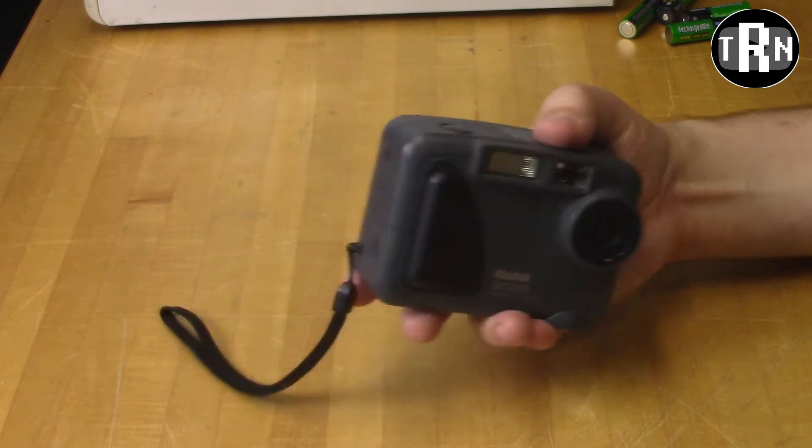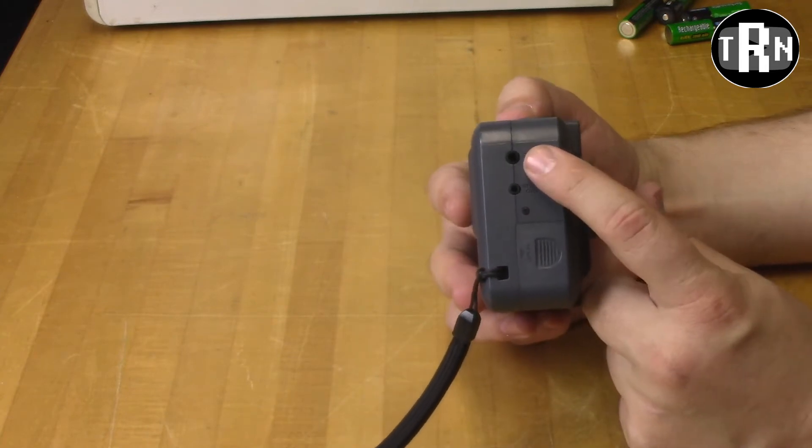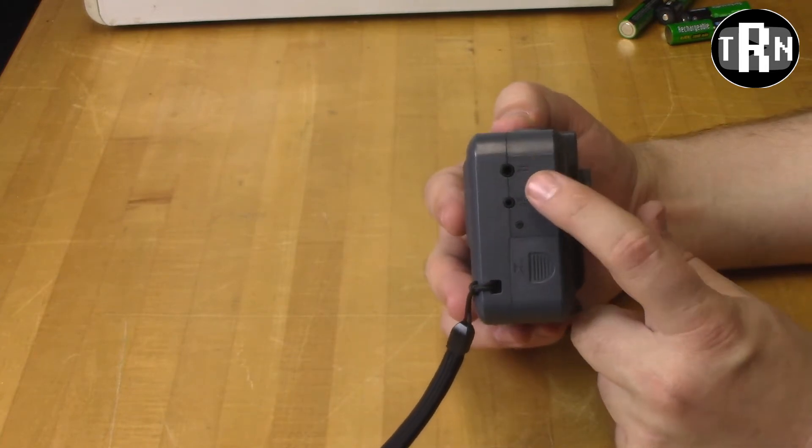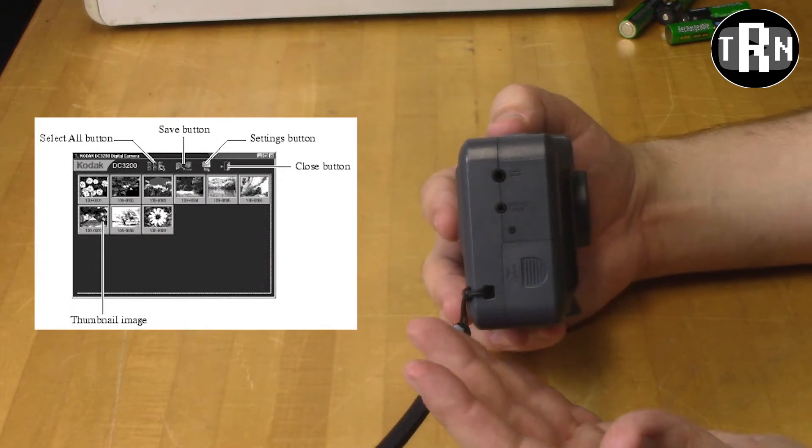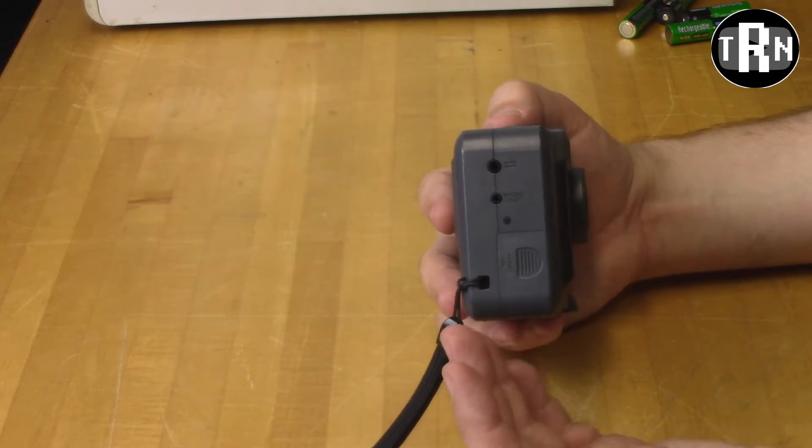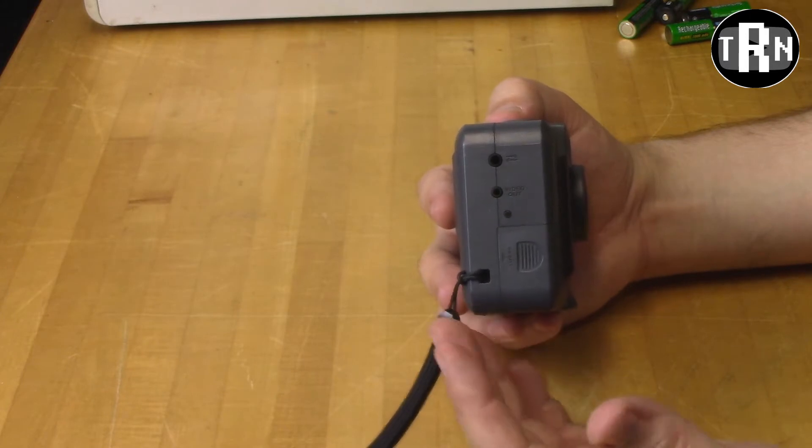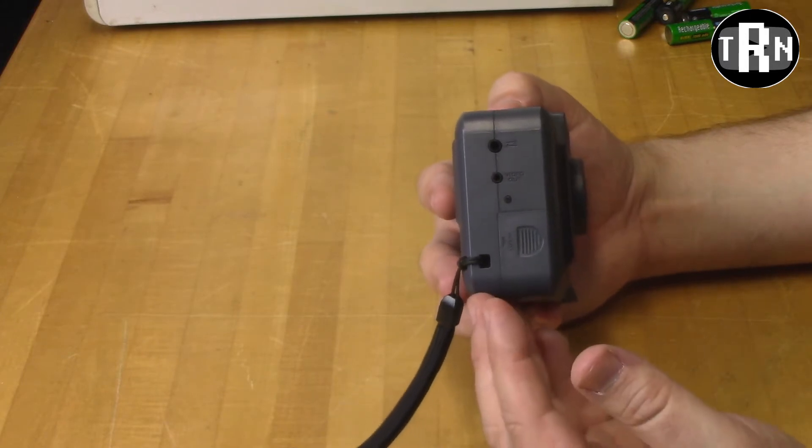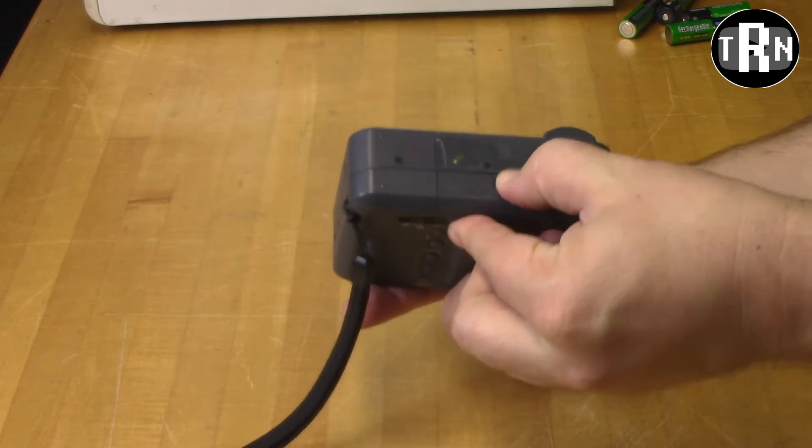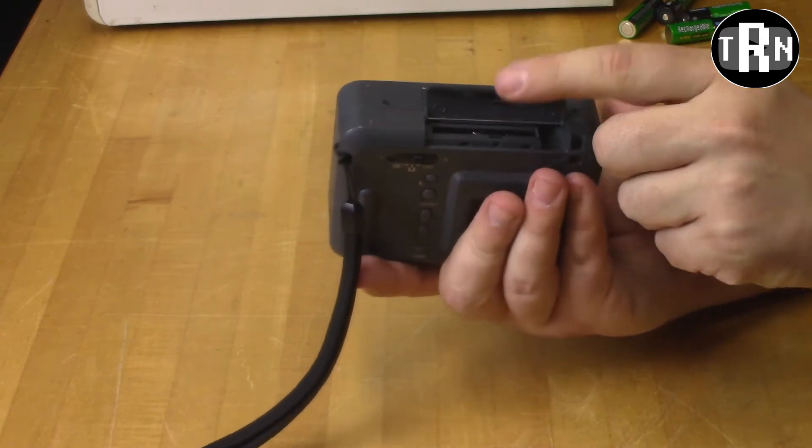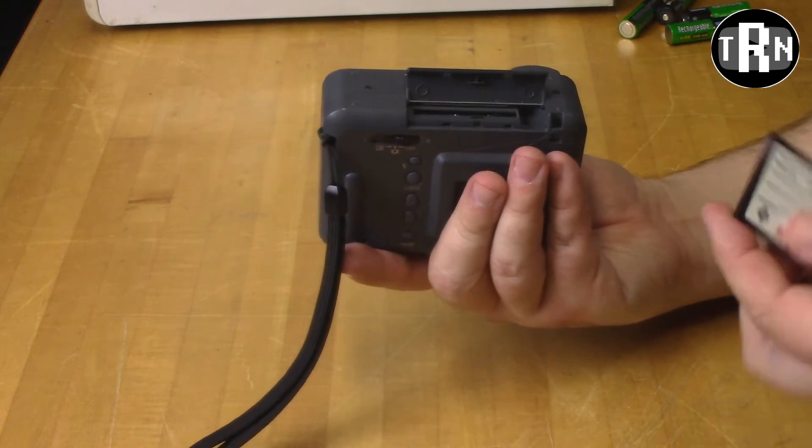You can transfer pictures via a serial port on the side here. However, to transfer those pictures, you did need special Kodak software that you cannot get anymore. And even if you could get it, I'm sure it does not work with any modern Windows. You can always use the compact flash slot on the bottom of this camera to get pictures on and off it.